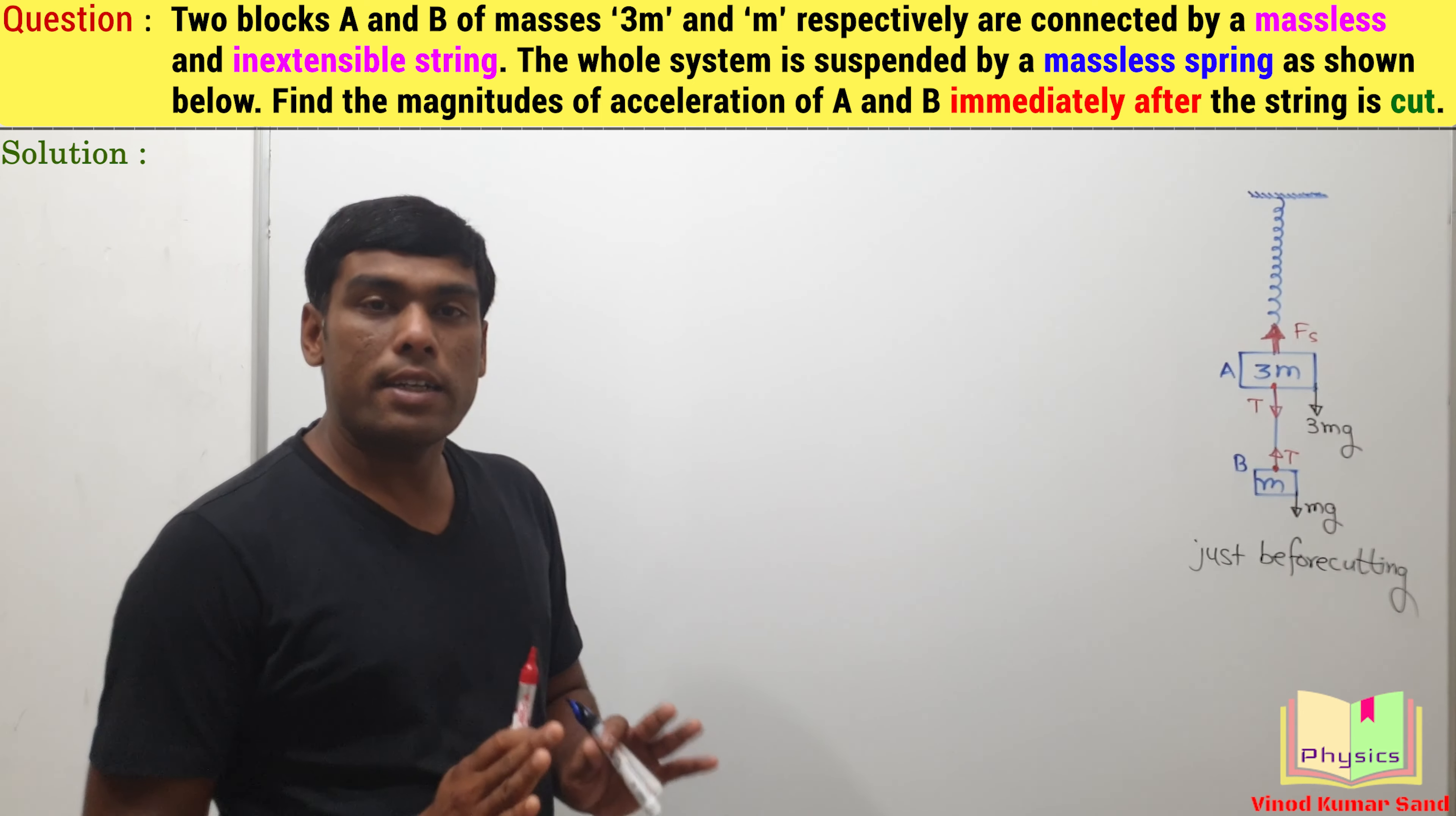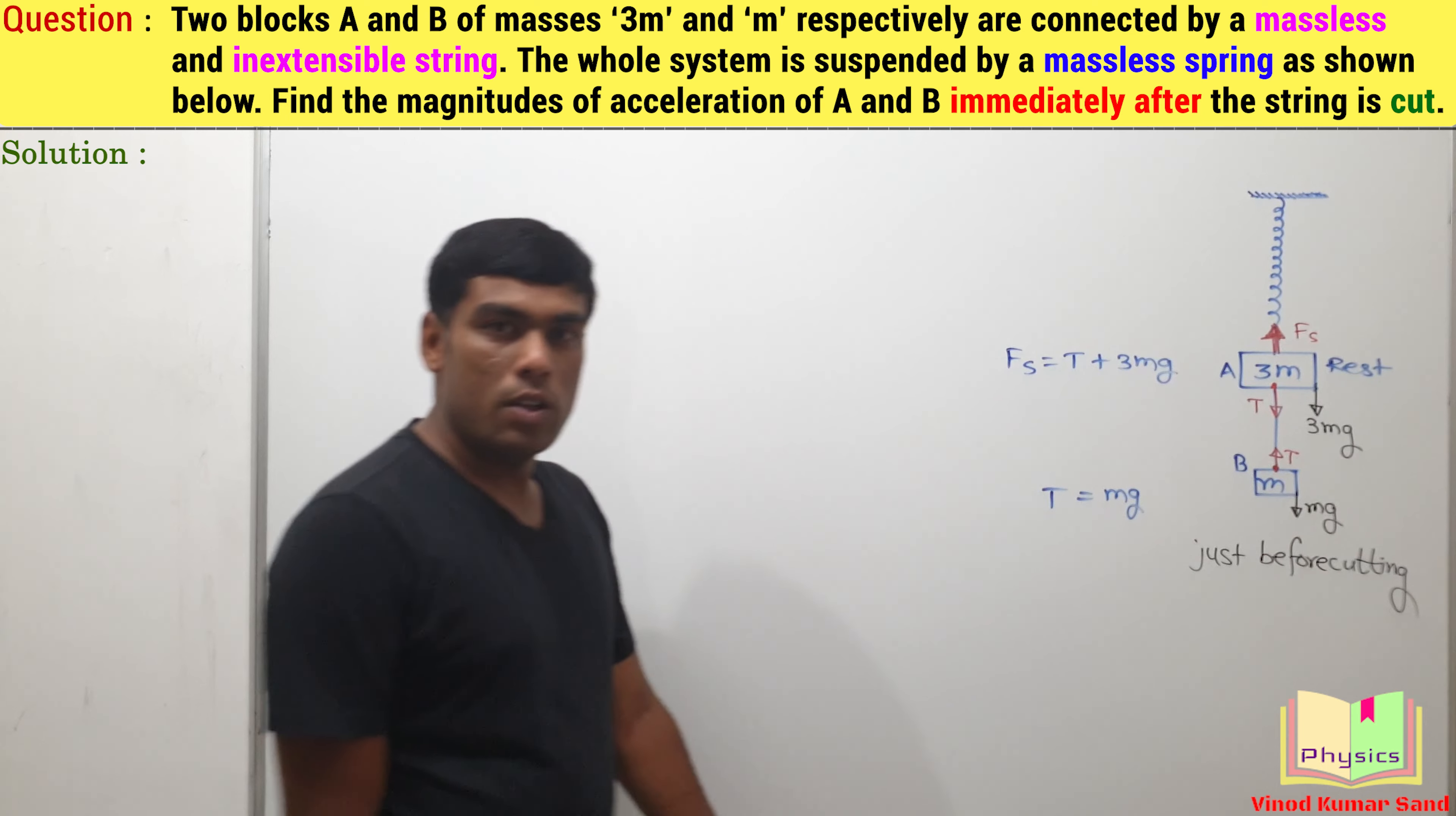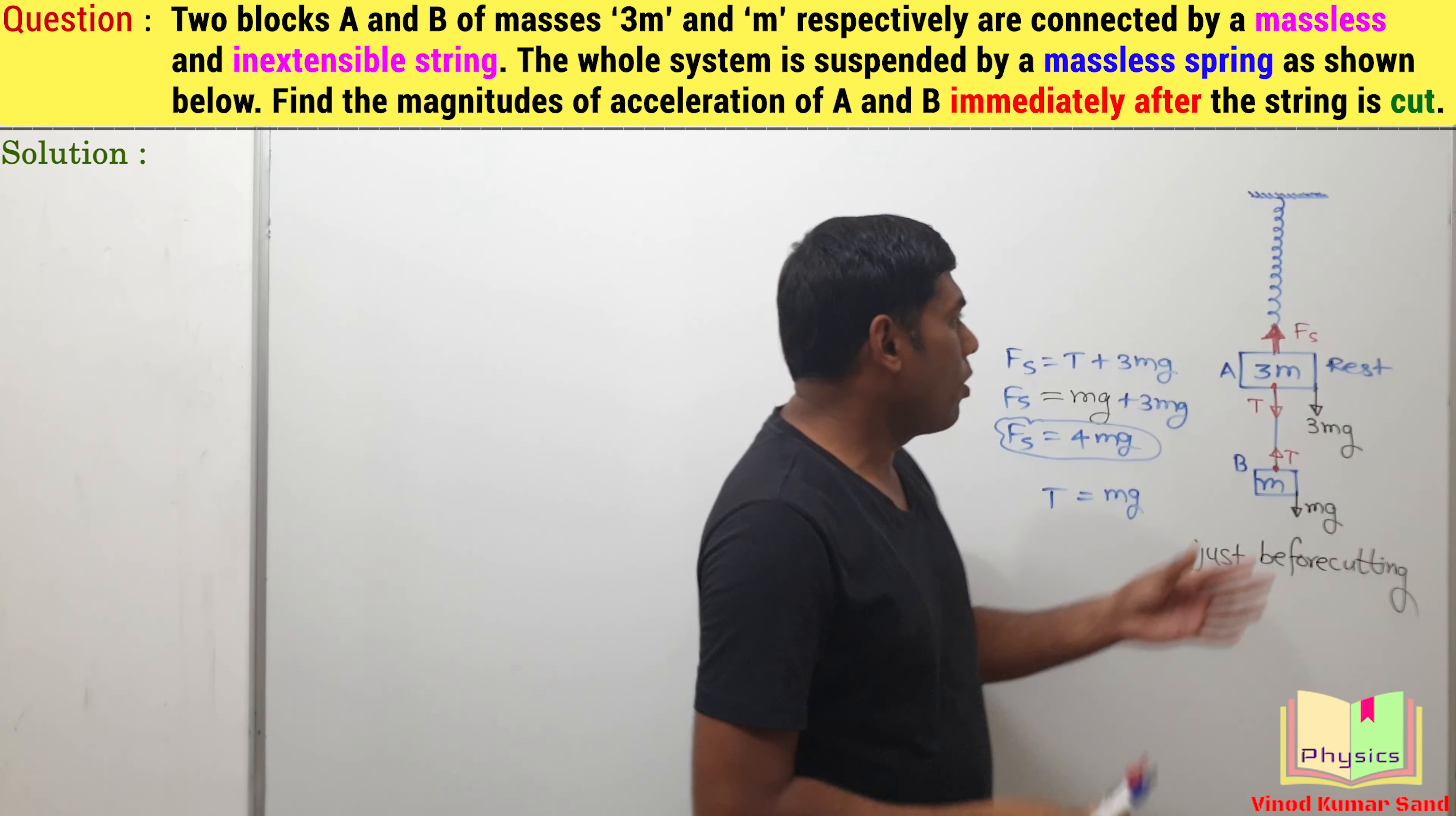Here the entire system is at rest, so the net forces are balanced. Writing this: Fs equals T plus 3mg, and here we can write T equals mg. This value of T I am substituting here, so Fs equals mg plus 3mg, which means that Fs was equal to 4mg and this is evident logically also.